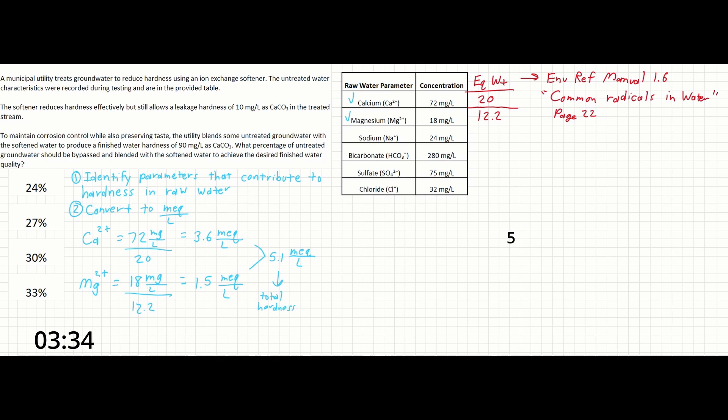Now that we are halfway through our conversion, in step 3, we can convert from milliequivalents per liter to milligrams per liter as CaCO3. In many water softening problems, hardness is reported as milligrams per liter as calcium carbonate or CaCO3 because it provides a consistent basis for comparison among many parameters.